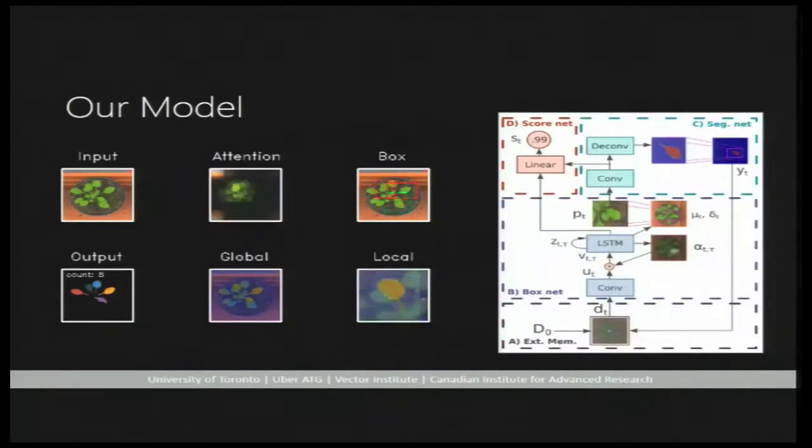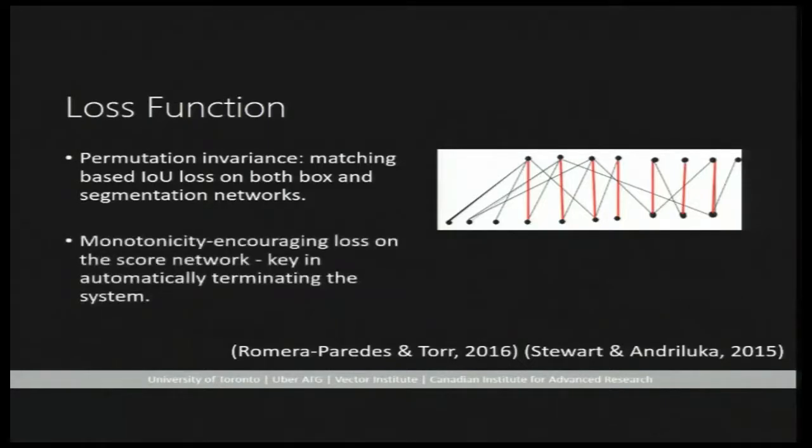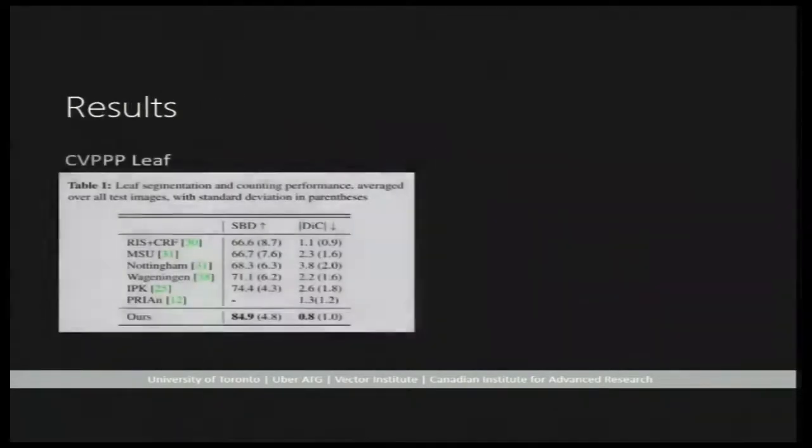Our loss function is designed in part based on prior work. A permutation invariant matching-based IOU loss is applied on both box network and segmentation network to ensure each instance is found and segmented. The scoring loss encourages all outputs of 1 to precede the outputs of 0.